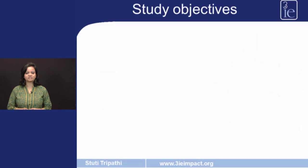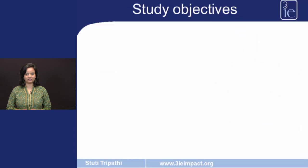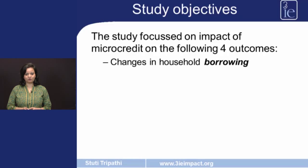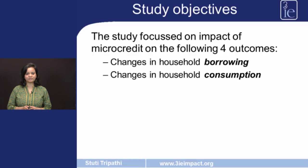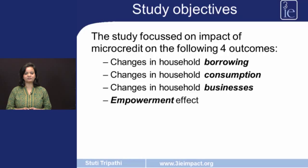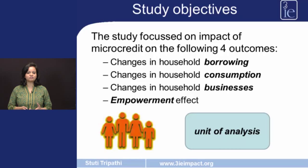So what were the researchers trying to find? The study focused on the impact of microcredit on four outcomes: changes in household borrowing, changes in household consumption, changes in household businesses, and the empowerment effect of microfinance — specifically whether it changed the way women participated in household decision making. The household was the unit of analysis.